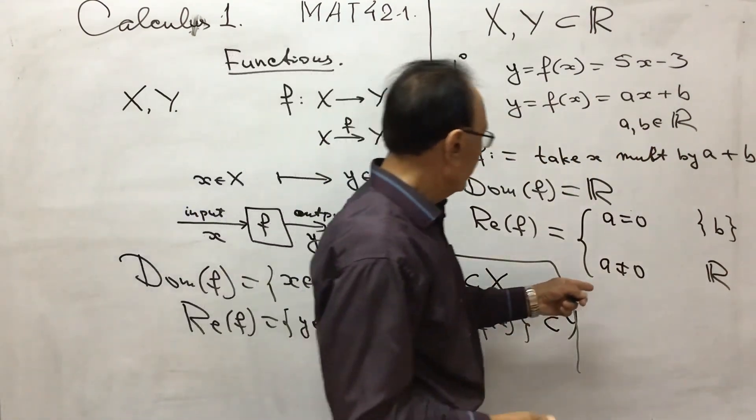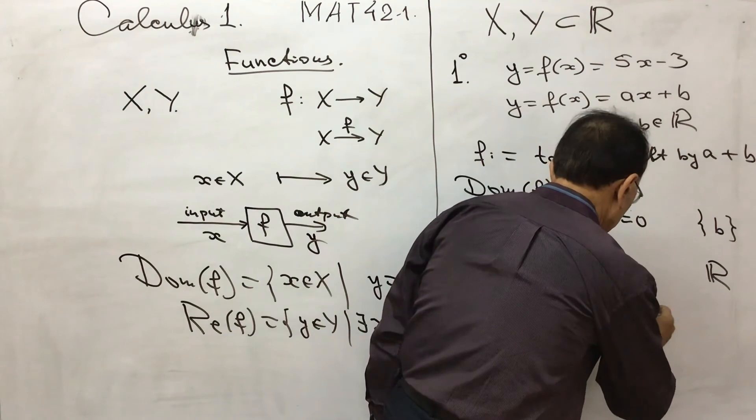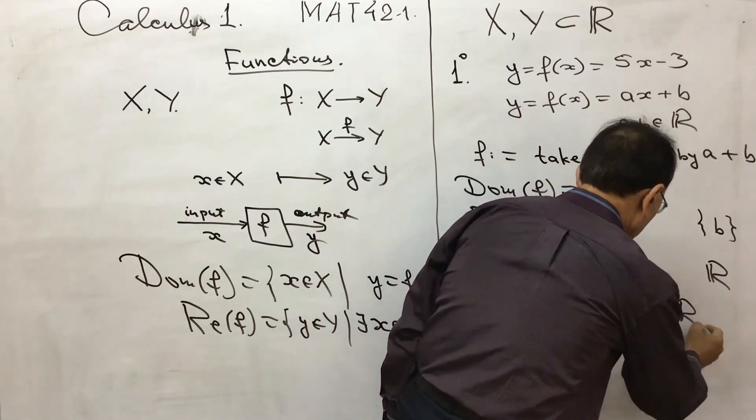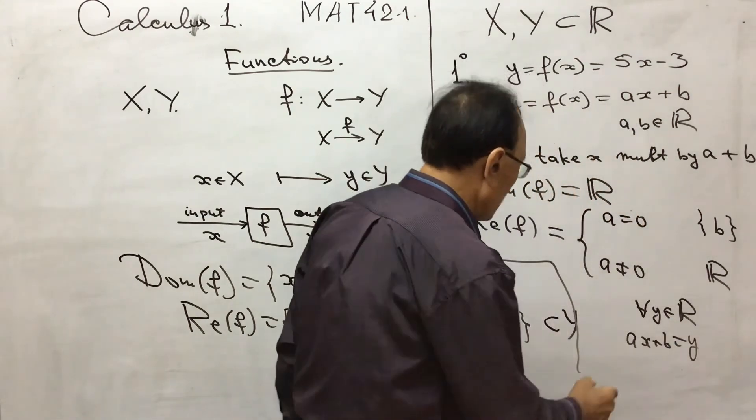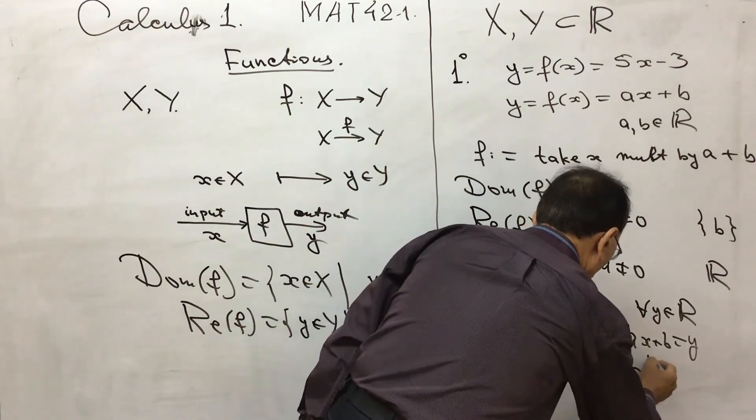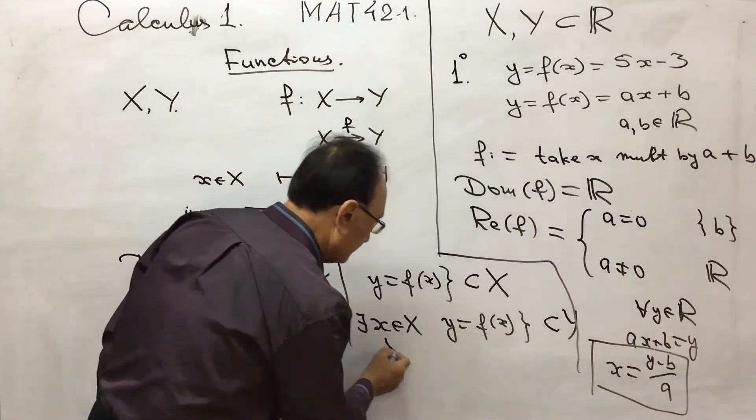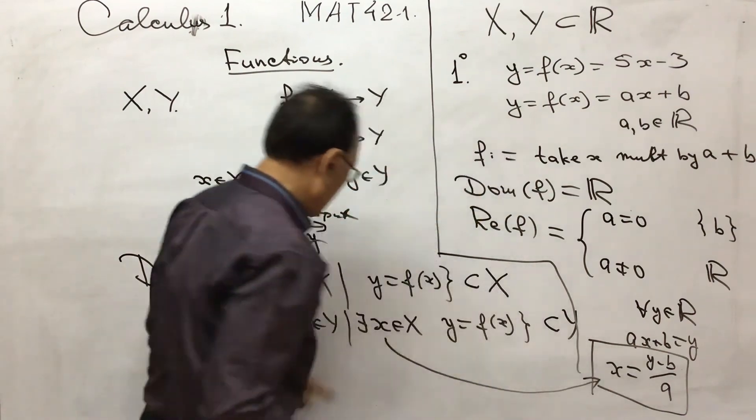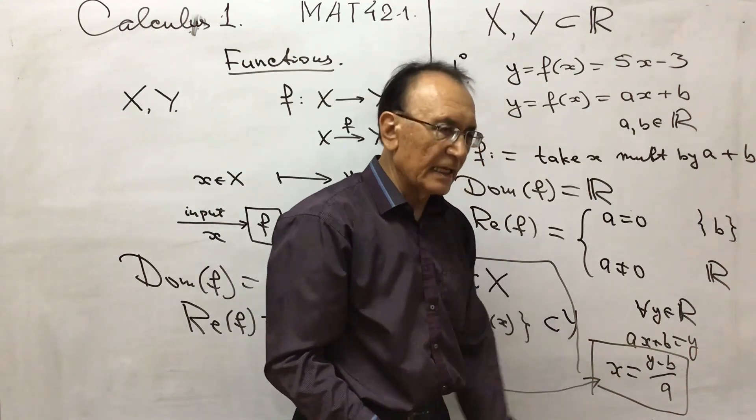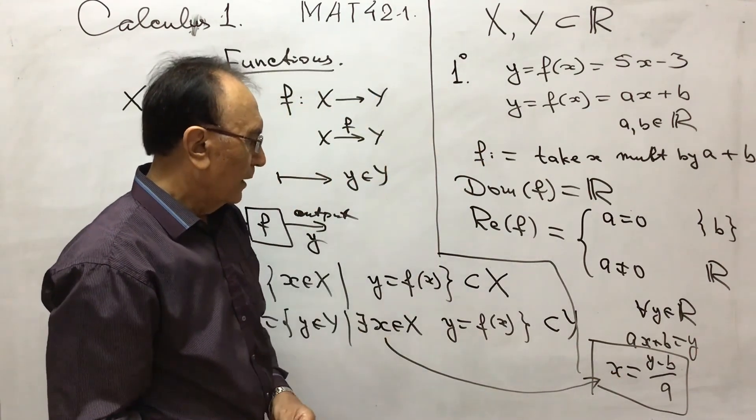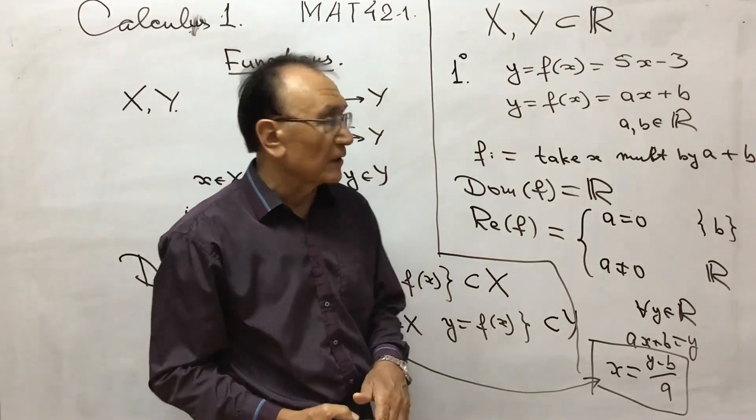Indeed, if you take any y, any y from R, then you can solve this linear equation. So x is (y minus b) over a. So this is the x. This x existence will require the range. So this is exactly the x which goes to our y. This function is called a linear function.